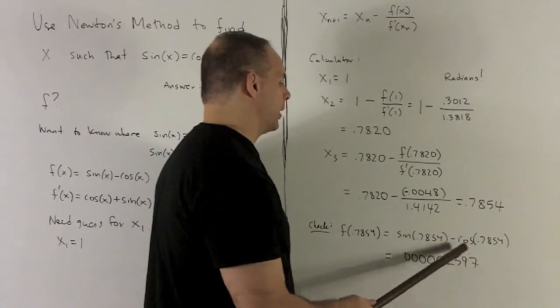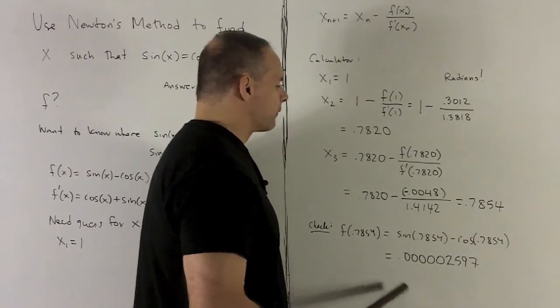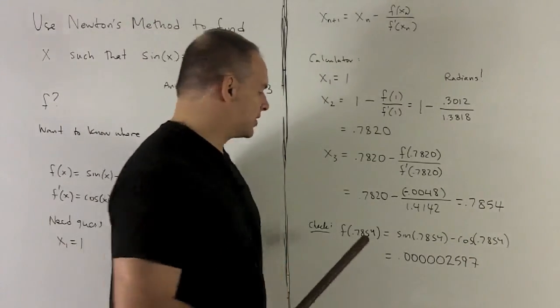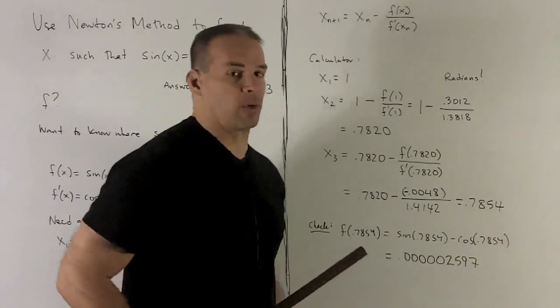Once I get to decimal place six, we start picking up some numbers. So for all intents and purposes in the real world, that's going to be zero. So this is definitely going to be close enough to my root.